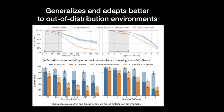In addition to zero-shot out-of-distribution generalization, when you do a little bit of fine-tuning, the jump for thought cloning (blue) is much bigger than for behavioral cloning (orange). So not only are these things better at generalizing out of distribution, they're quicker to adapt and learn new skills out of distribution — which bodes quite well for open-endedness, which is all about adapting to new situations.